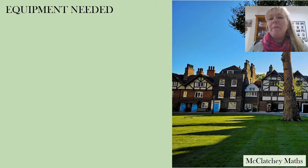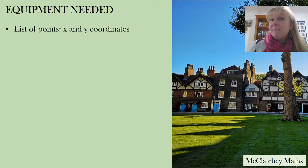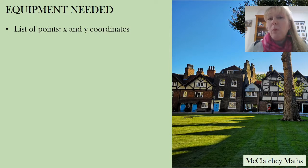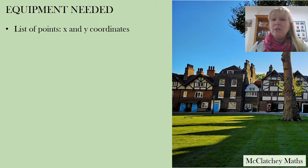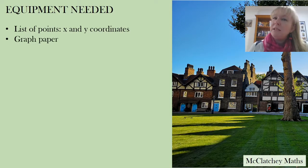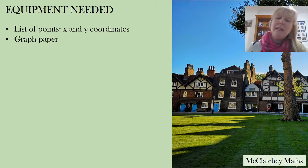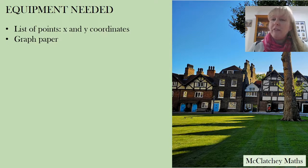Let's start by talking about equipment. We need firstly a list of X and Y coordinates — these form our points on the scatterplot. This might be provided to you or it might be data you've collected yourself. Secondly you're going to need some graph paper. In an exam you'll probably be given a grid, but otherwise you need graph paper to make sure everything is done correctly to scale.